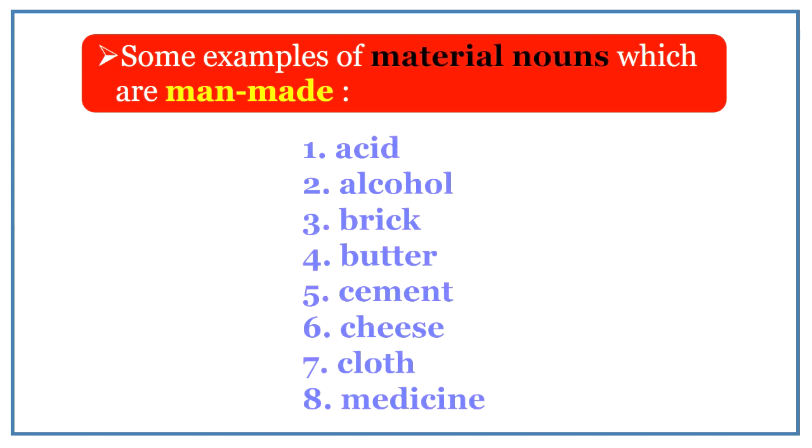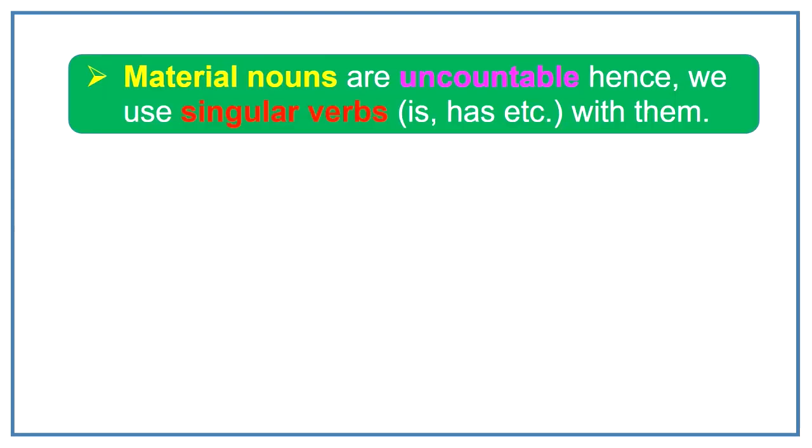Here are some examples of man-made material nouns such as acid, alcohol, brick, butter, cement, cheese, cloth and medicine.